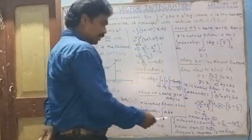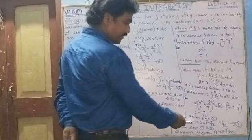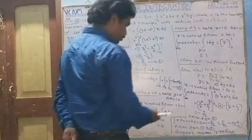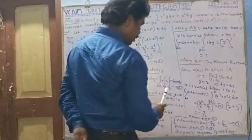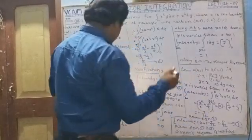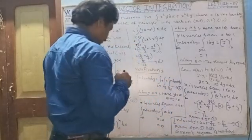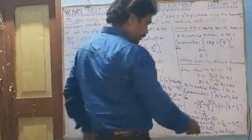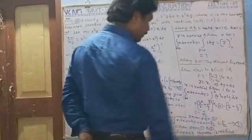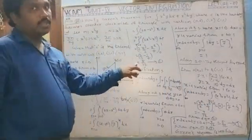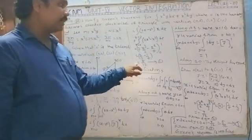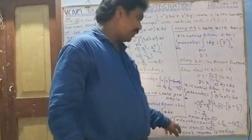From equation 2: integral over C of M dx plus N dy equals along OA: 0, plus along AB: 1, plus along BO: minus 7 by 12. That gives 1 minus 7 by 12 equals 5 by 12. This is equation 3. From equations 1 and 3, the double integral equals 5 by 12, and the line integral over C also equals 5 by 12. Both are equal, so Green's theorem is verified.